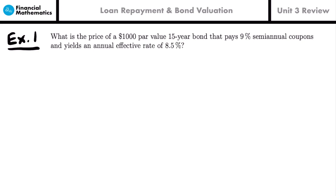Example one: What is the price of a $1,000 par value, 15-year bond that pays 9% semi-annual coupons and yields an annual effective rate of 8.5%? Our goal is to calculate the price of this bond. Let's note all the different parts: the par value, which we can assume is the face value, is F = $1,000. Since no redemption value is given, C = F = $1,000.